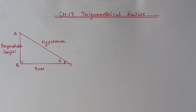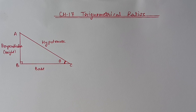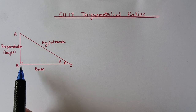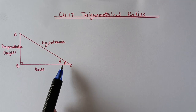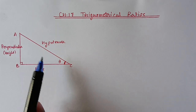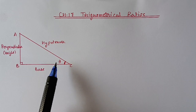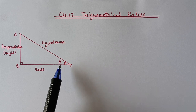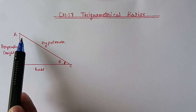Hello students, from today we are starting chapter number 17: Trigonometrical Ratios. In trigonometry you will study about the relationship between the angle and side of a right angle triangle. In a right angle triangle we have three sides and three angles. From these three angles, one angle will be 90 degrees and the rest two angles will be acute angles, and the sum of these two angles will be 90 degrees — it means these two angles are complementary angles. If one is theta then the other will be 90 minus theta.